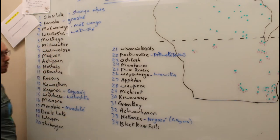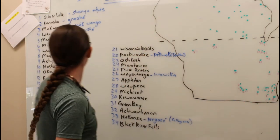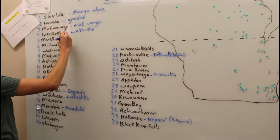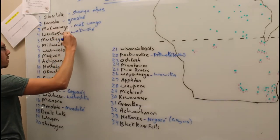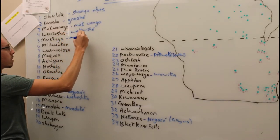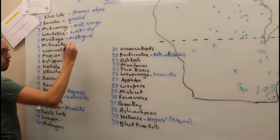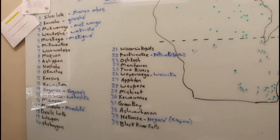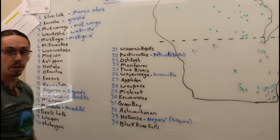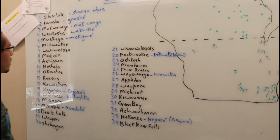Muskego is over here, and that's actually Mskigwe. Mskigwe is a sunfish.